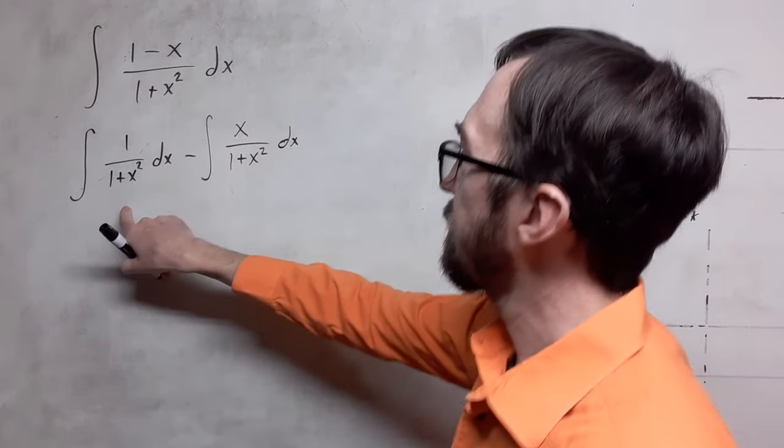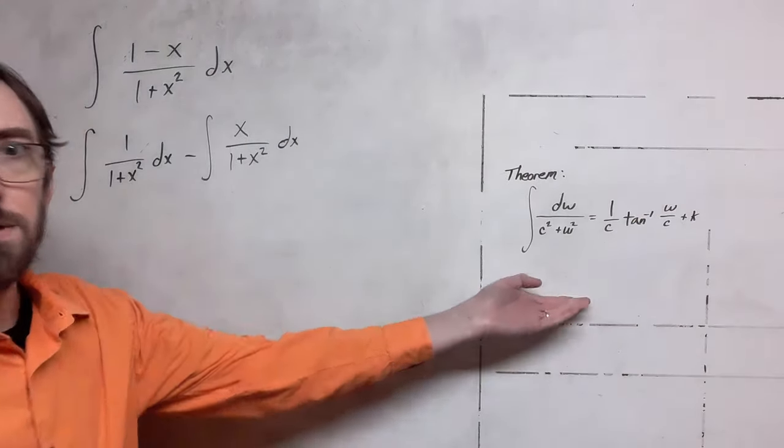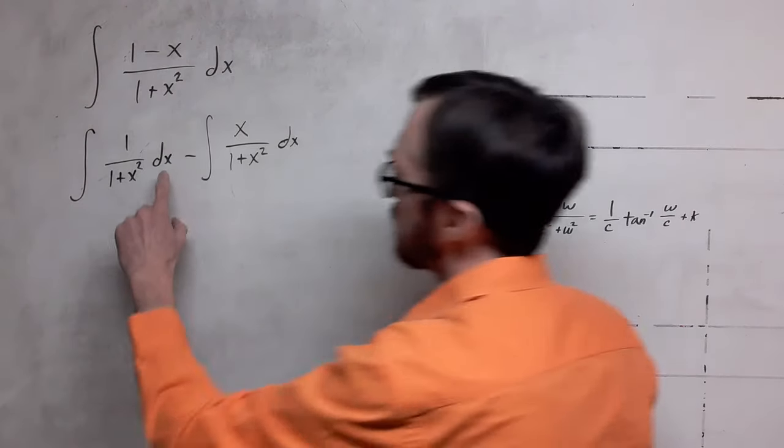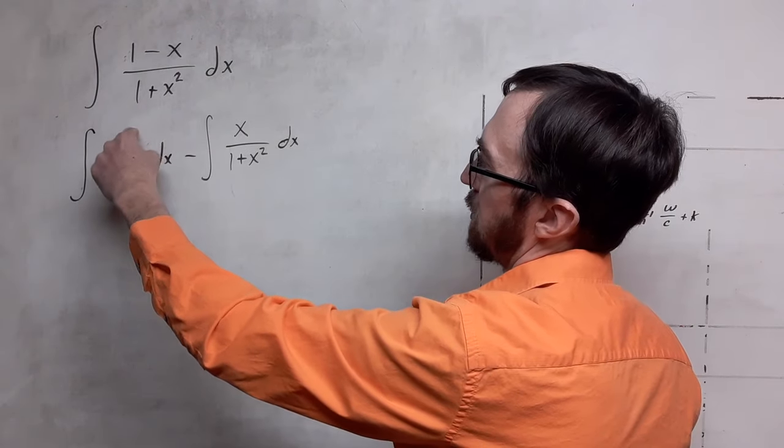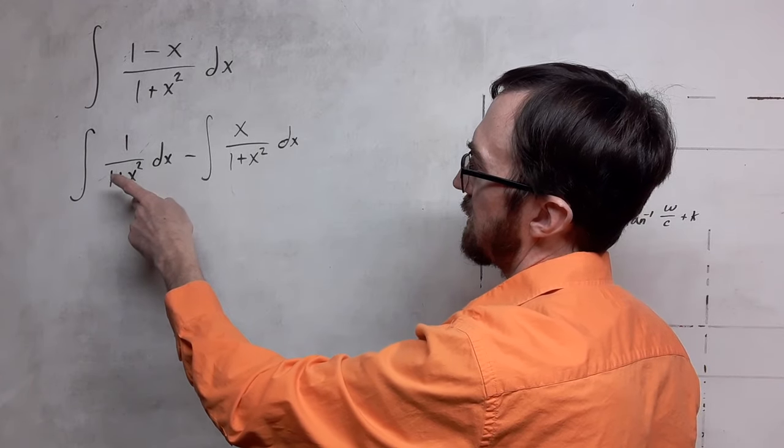So this very first integral here, this is where we're going to use the theorem that we've stated over here. If you move this dx to multiply it by the 1, you have this constant squared plus x squared.